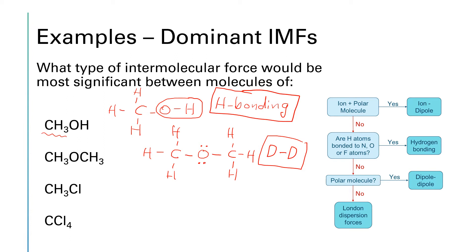The next compound is CH₃Cl — three hydrogens and one chlorine on a central carbon. Is there an ion plus a polar molecule? No. Do we have hydrogens bonded to nitrogen, oxygen, or fluorine? No. Is this a polar molecule? Yes — the central carbon has two distinct domains: a single bond to chlorine and three single bonds to hydrogen. So CH₃Cl will be dipole-dipole as well.